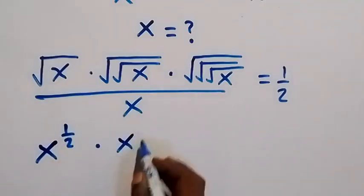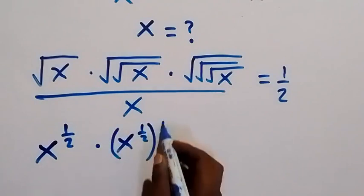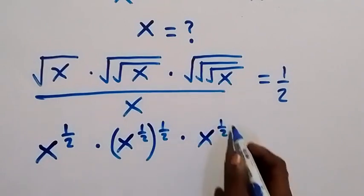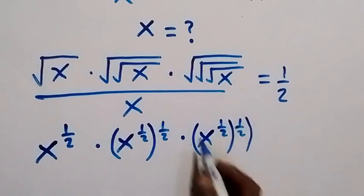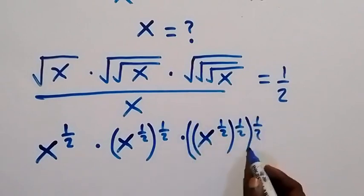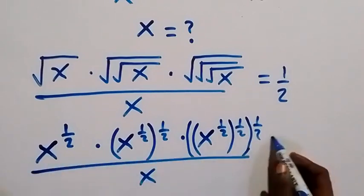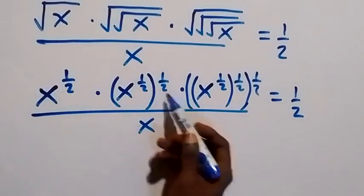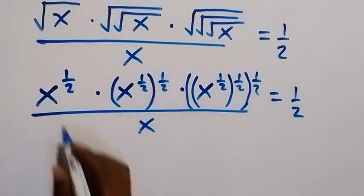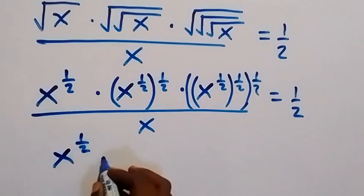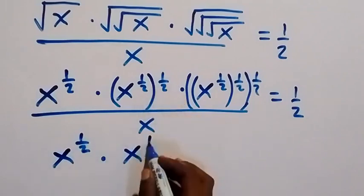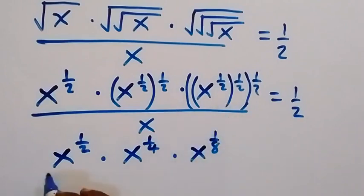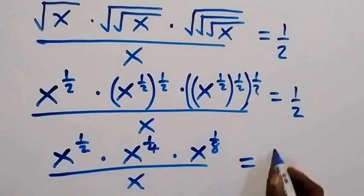Then multiply by x raised to power one half, then raised to power one half — we have it two times here. Then times x raised to power one half, then raised to power one half, then raised to power one half — since we have it three times. All over x which equals one over two. Applying the law of indices, this power multiplies: x raised to power one half, then times x raised to power one over four, then times x raised to power one over eight.